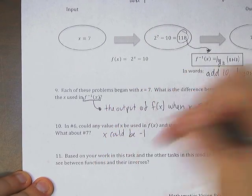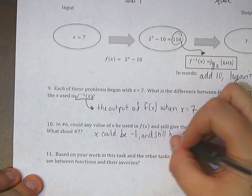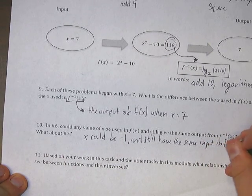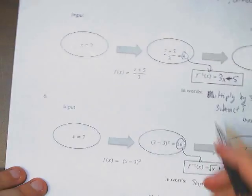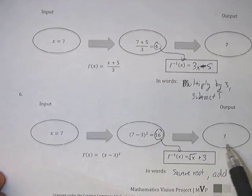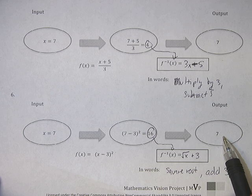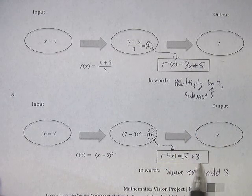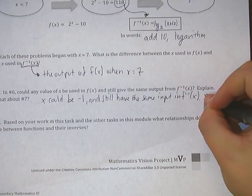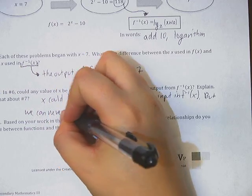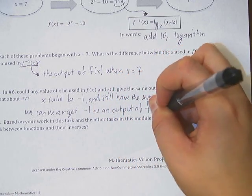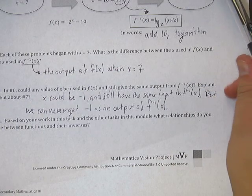Now, 7 minus 3 is 4. 4 squared is 16. What if we wanted this part in here to be negative 4? Well, my answer would then be if we put in negative 1. Negative 1 minus 3 would give us negative 4. Negative 4 times negative 4 gives us 16. So you could, there's two different possibilities here. So, x could be negative 1 and still have the same input in.